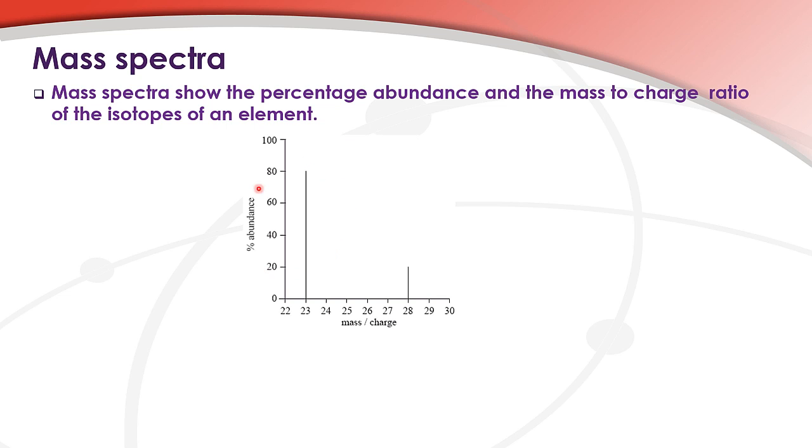Here is a mass spectrum. On the y-axis we have percentage abundance, on the x-axis we have mass to charge ratio. This mass spectrum shows we have two isotopes: an isotope with a mass to charge ratio of 23.